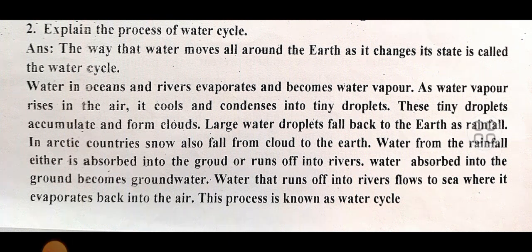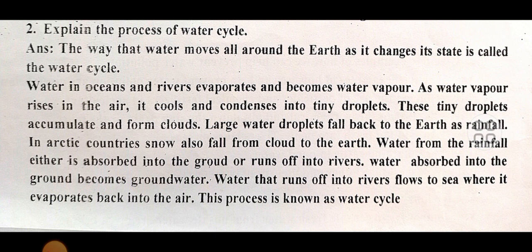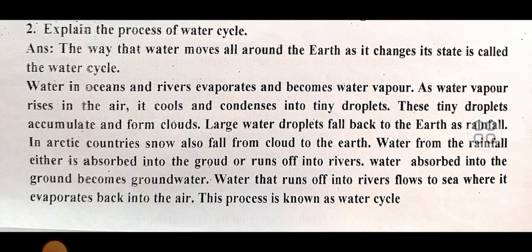Descriptive question two: Explain the process of the water cycle. The way that water moves all around the earth as it changes its state is called the water cycle. Water in oceans and rivers evaporates and becomes water vapor, which rises into the air. It cools and condenses into tiny droplets, which accumulate and form clouds. Large water droplets fall back to the earth as rainfall. In cold countries, snow also falls from clouds to the earth. Water from rainfall is either absorbed into the ground or runs off into rivers. Water absorbed into the ground becomes groundwater. Water that runs off into rivers flows to the sea, where it evaporates back into the air. This process is known as the water cycle.